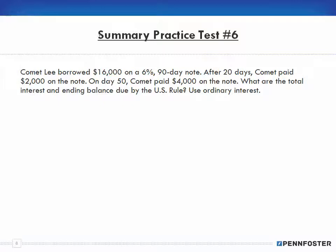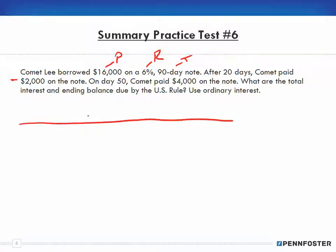The problem says Comet borrowed $16,000 on a 6%, 90-day note. So $16,000 is the principal, the rate is 6%, and the time is 90 days. Let's diagram it out — borrowing $16,000 at 6% for 90 days.